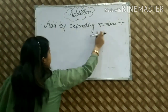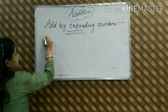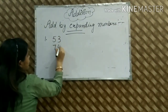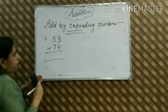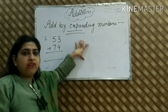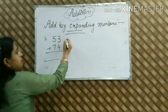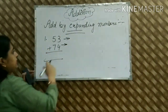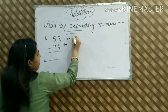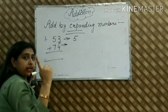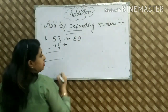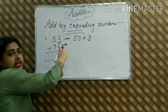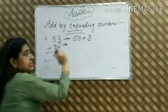Our topic is add by expanding numbers. We have the digits 53 and 74. We will add in short form and expand it. We have the first digit 53. How do we write 53? After 5, we have only 1 digit, so we will add one zero. Then we have 3 — 3 is a single digit, so there is no digit after it.